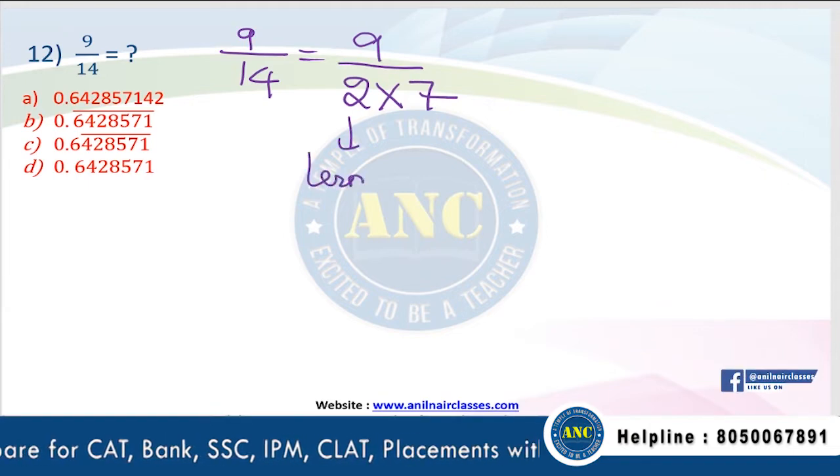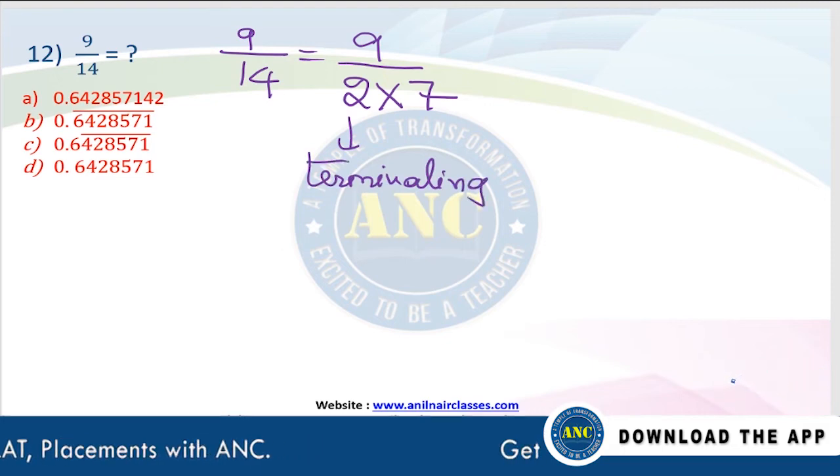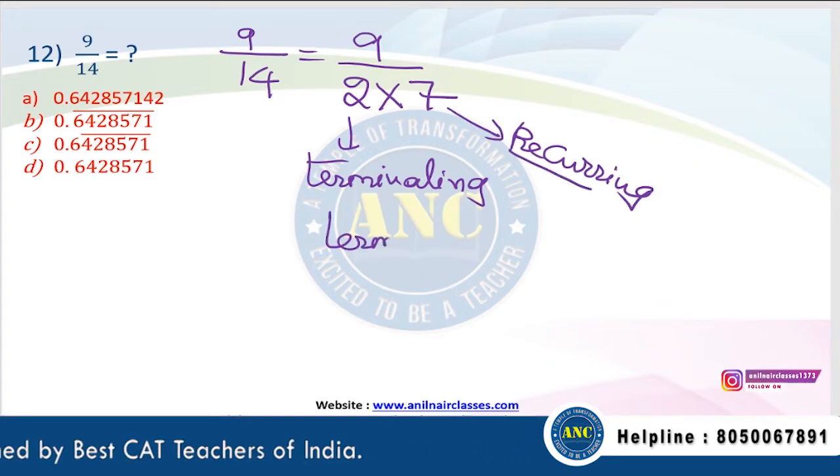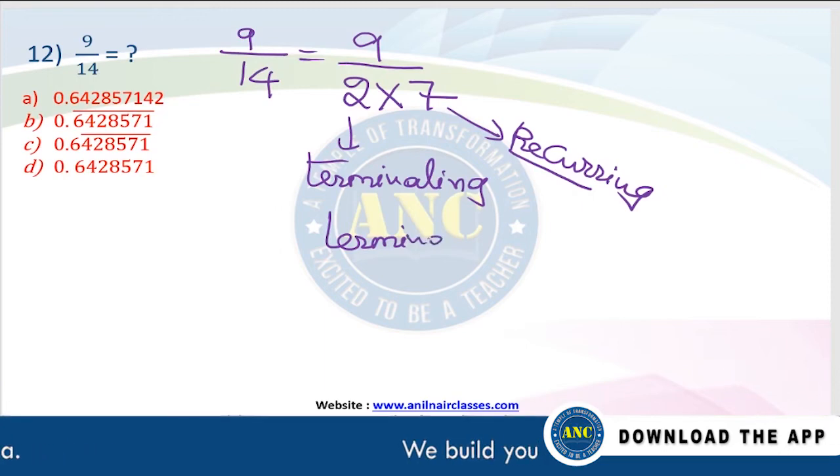2 means it should be terminating. 7 means it should be recurring. So answer should be a combination of, answer should be a combination.